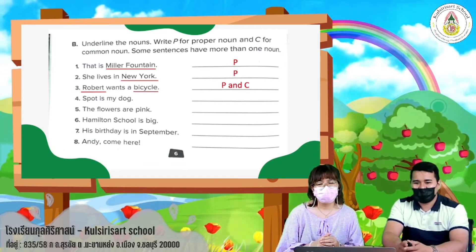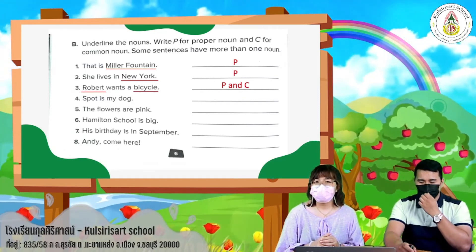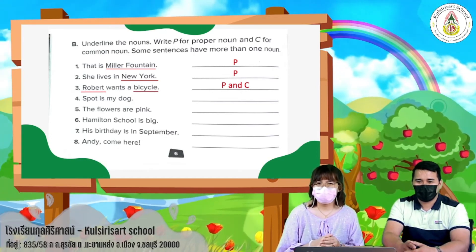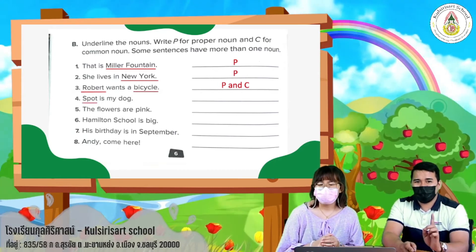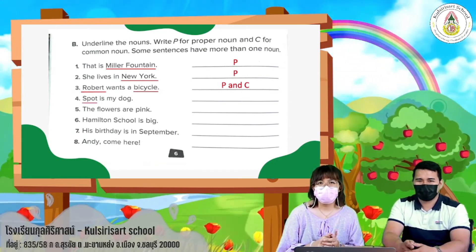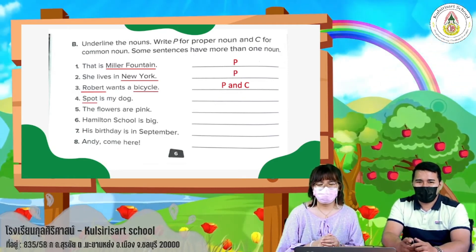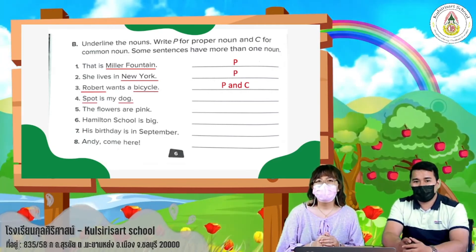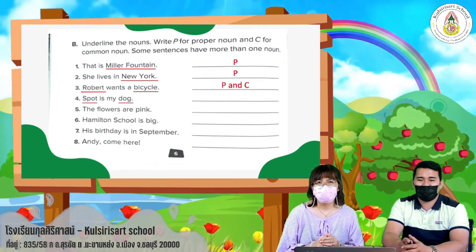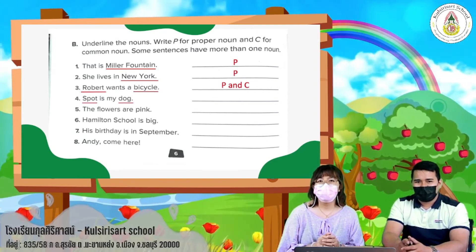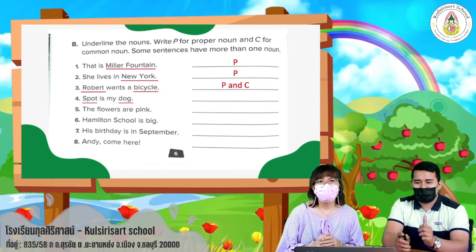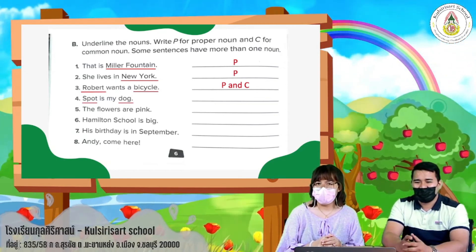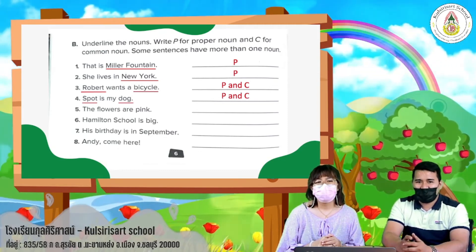Next sentence, number four: 'Spot is my dog.' In this sentence we have two nouns — Spot and dog. Spot is the name of the dog, so it's a proper noun. Dog is a common noun. Write P and C.